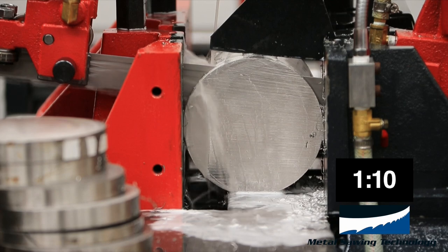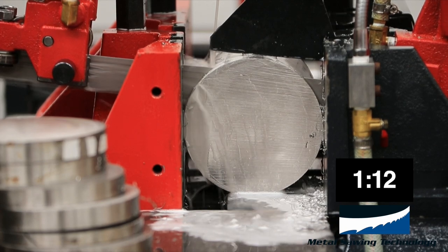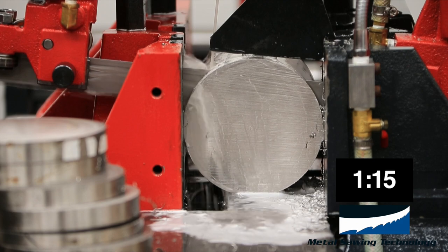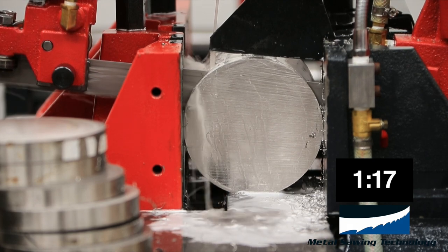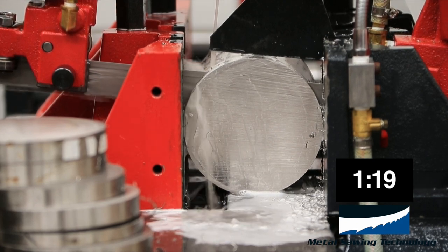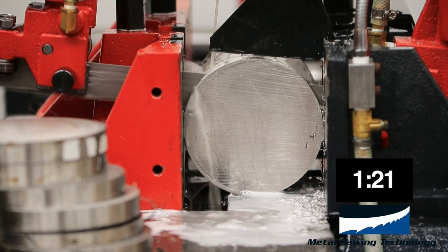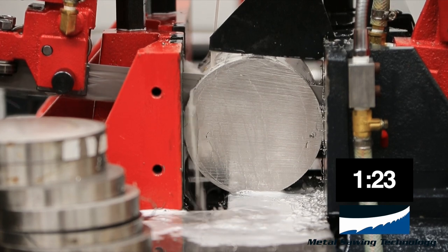The carbide tip triple tip band saw blade has a Rockwell hardness of 92. We're trying to cut this piece of 304 stainless today at a rate of up to eight square inches per minute.